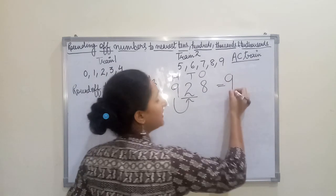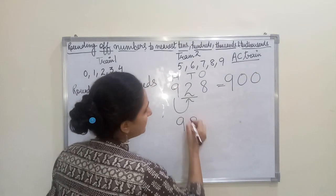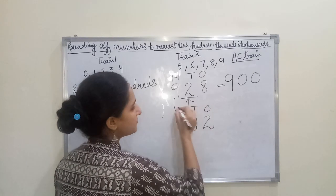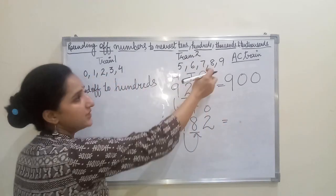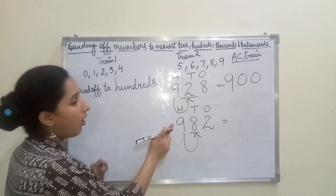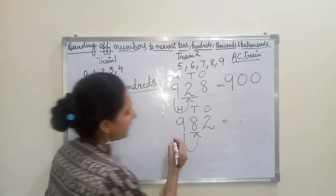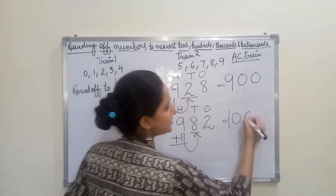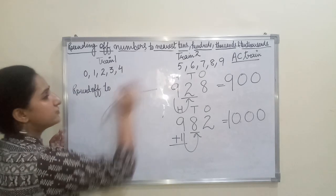So nine remains nine and the remaining digits become zero, giving us 900. Now let's take this example with a little twist in the digits — 982. Write down place values and mark the previous digit. Eight belongs to Train Two, the AC train. So one is added to the hundreds position — nine becomes ten — and the remaining digits become zero, giving us 1000.